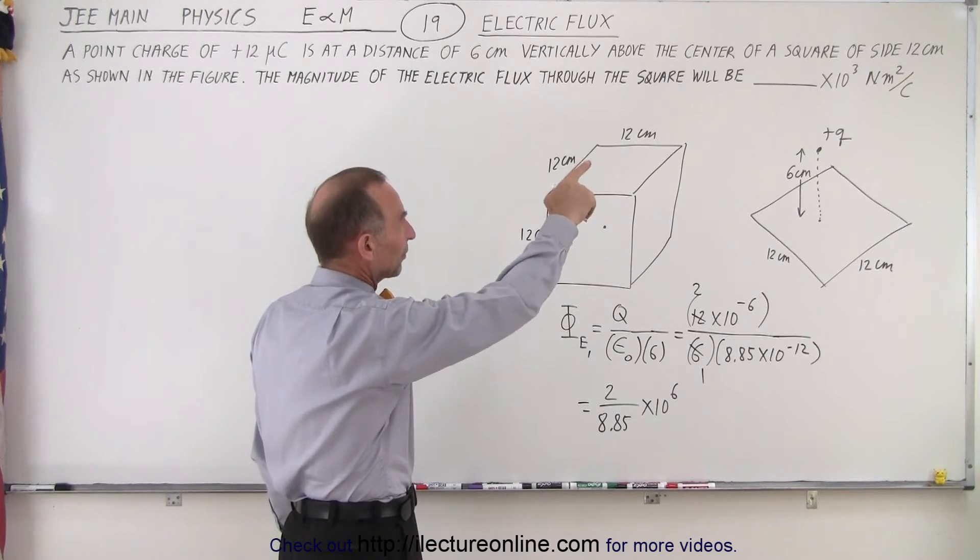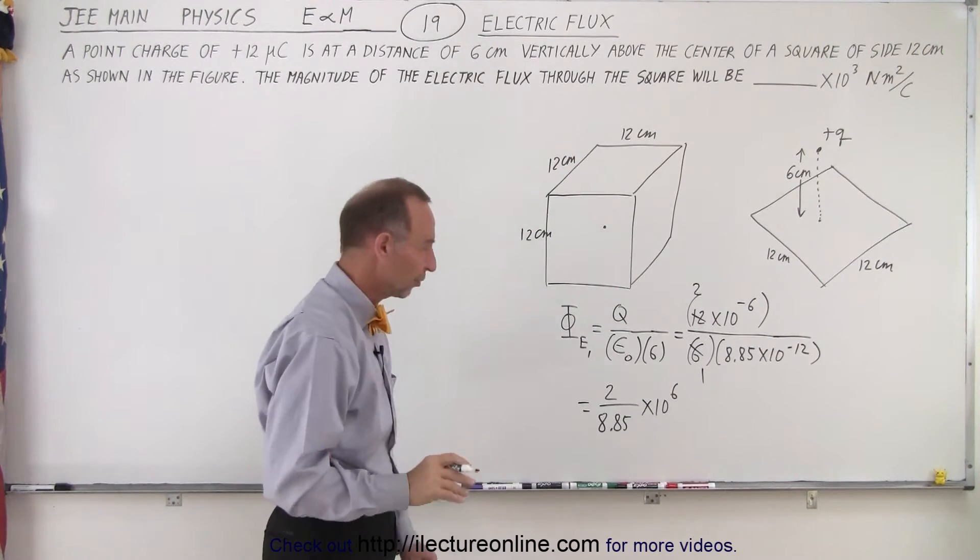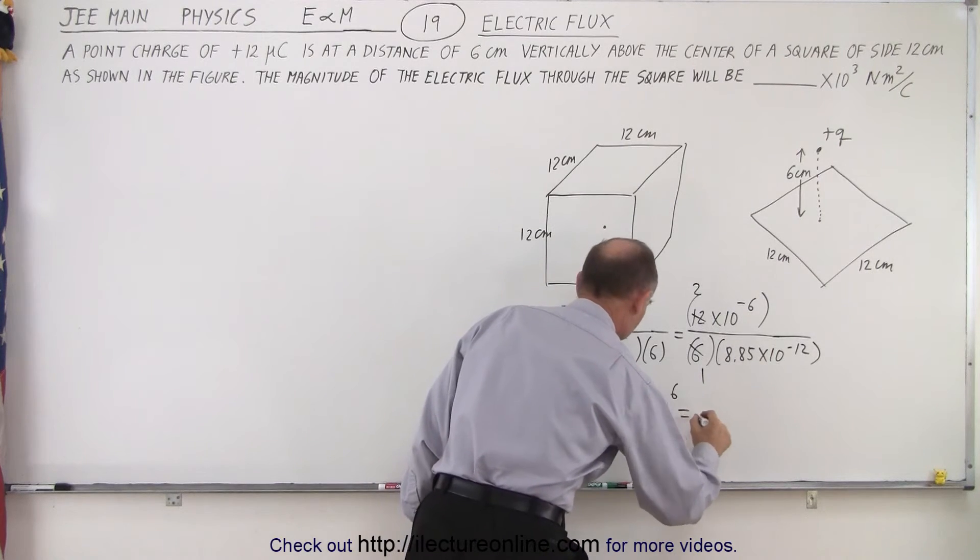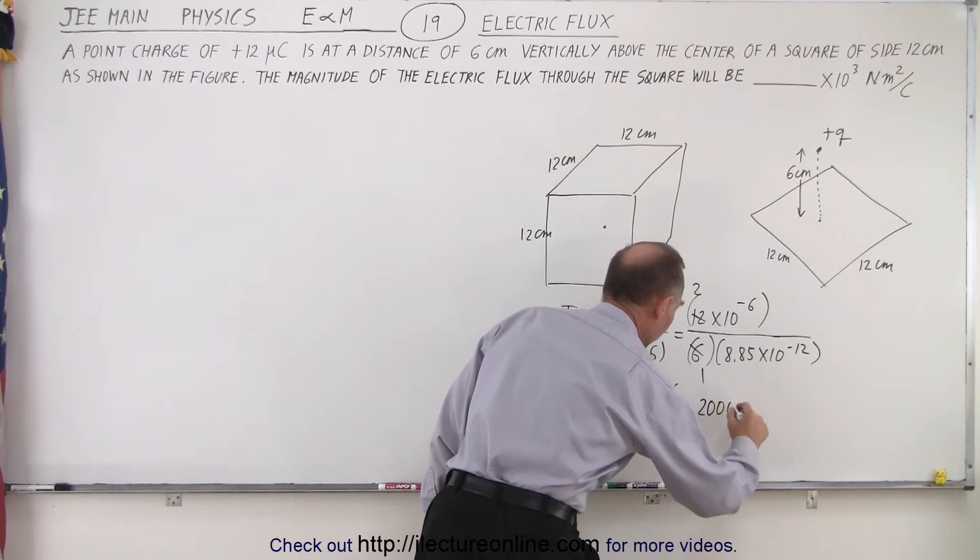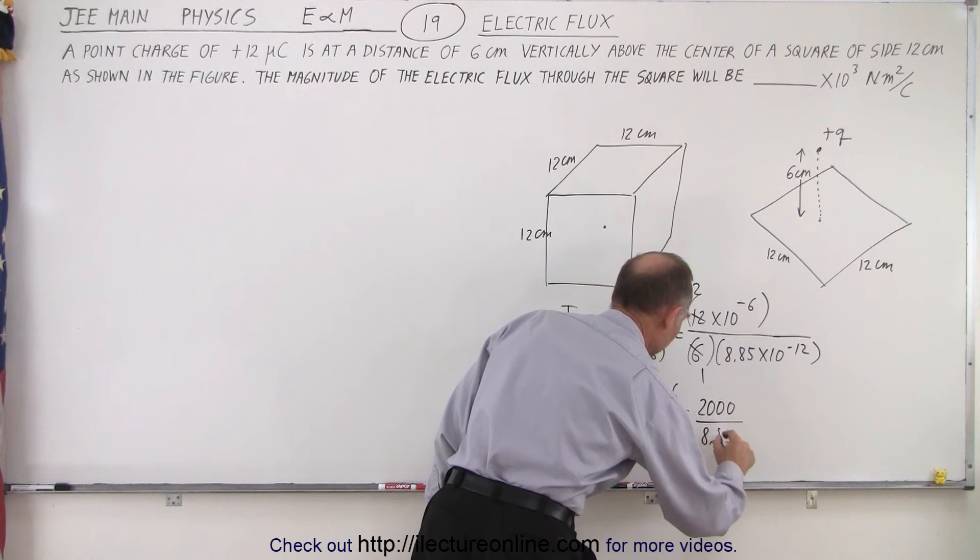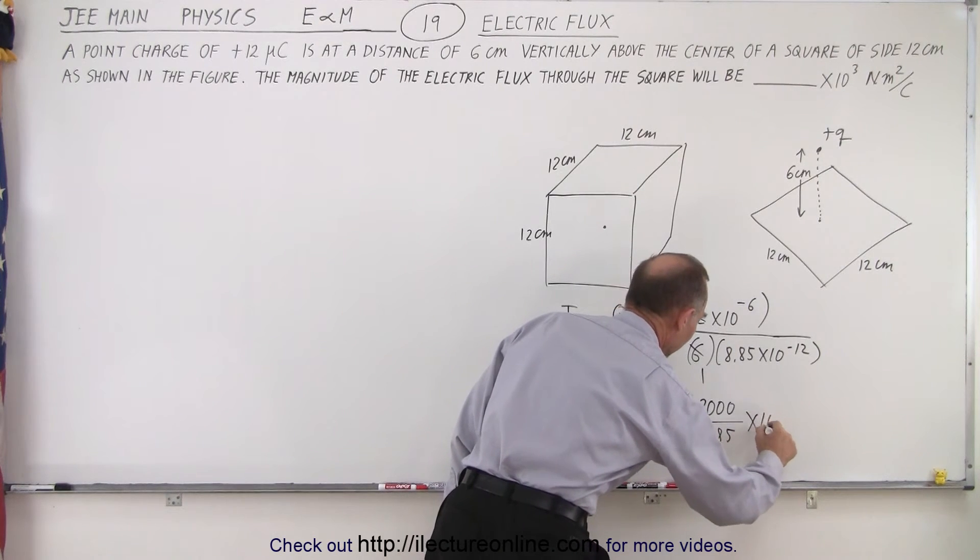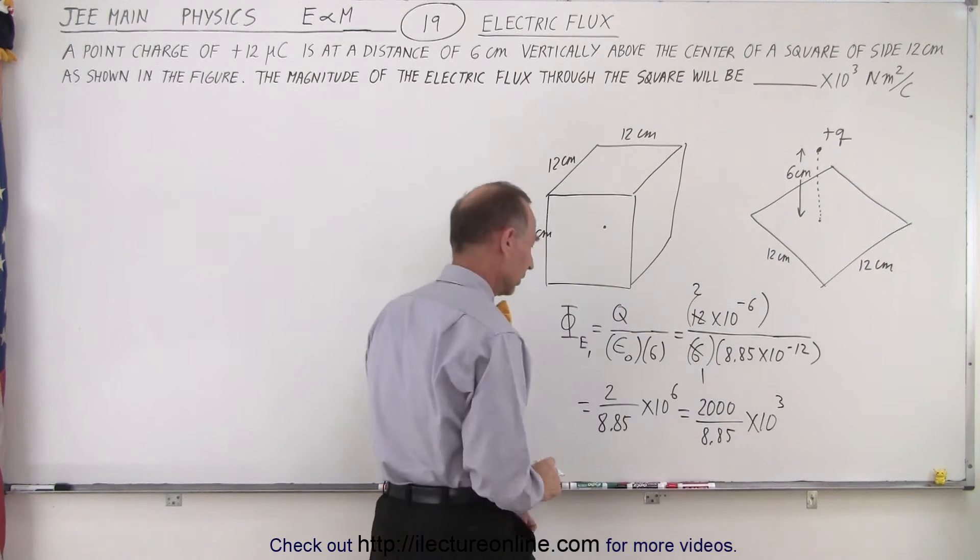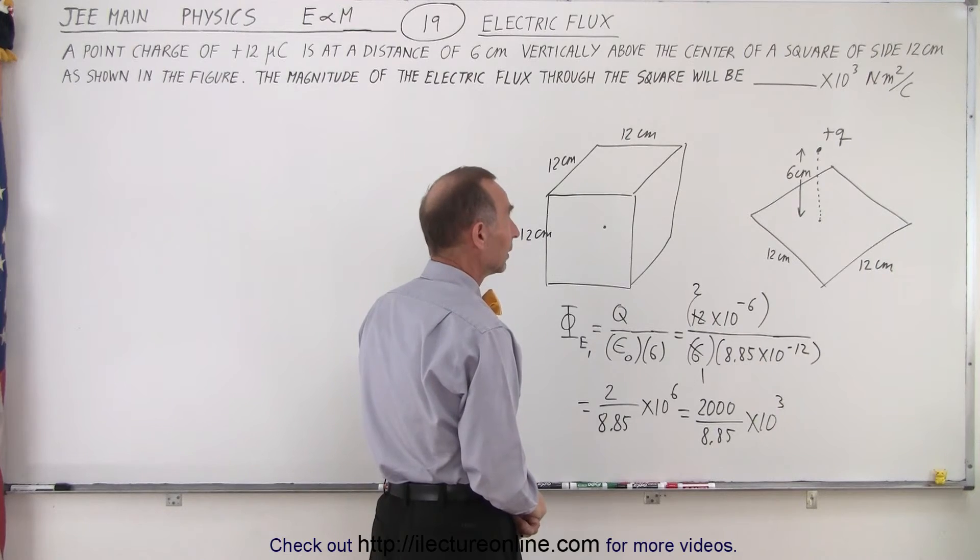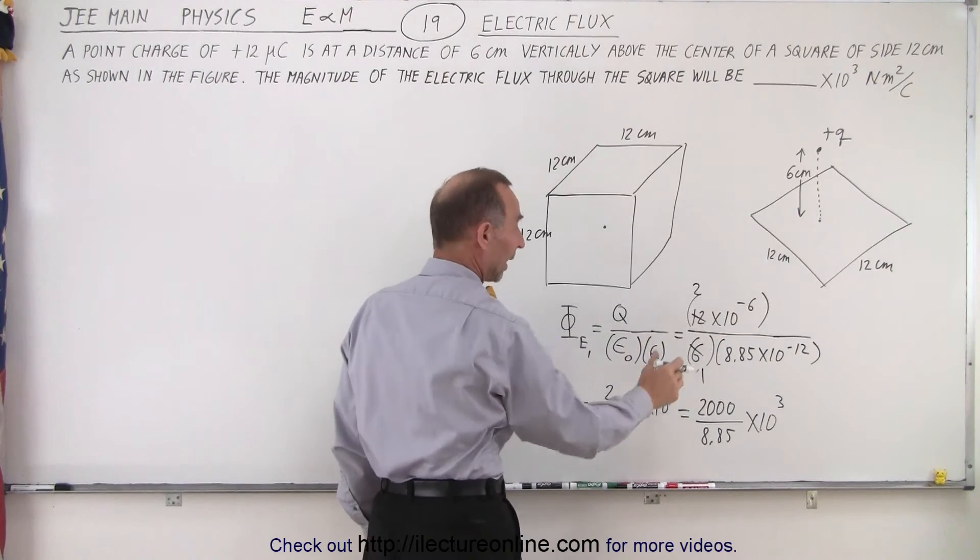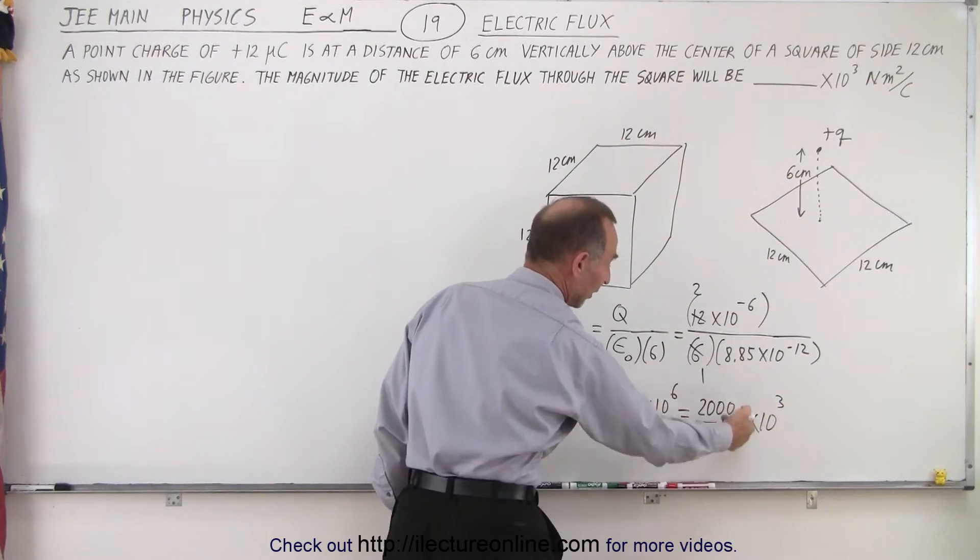Notice they're going to have it in terms of times 10 to the third, but we'll get there in just a moment. So maybe we can write this as 2,000 divided by 8.85 times 10 to the third. Okay, now we have it in the correct format.